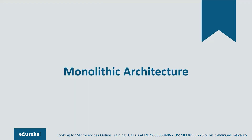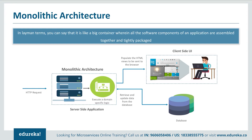What was monolithic architecture? It was like a big container where all the software components of an application were tightly packed together. Let's look at the client-server model. As a user, when you open a web UI, you just see a website. But behind the scenes, the server side application has different features which have to be handled together — features such as handling HTTP requests, retrieving and updating data from a database, and executing domain-specific logic, all put on a single framework.